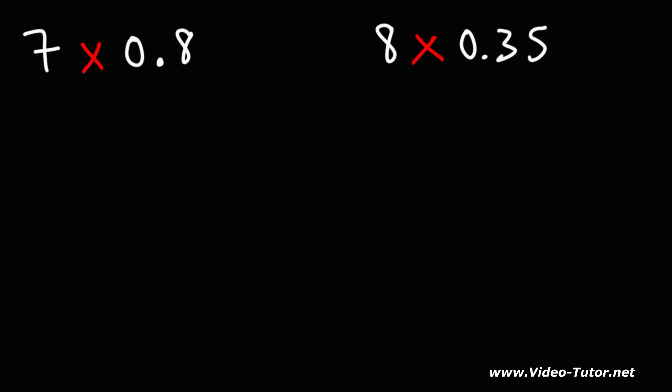So let's start with the first example. What is 7 times 0.8? So I'm going to write it this way, 0.8 times 7.